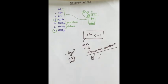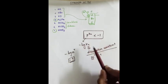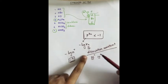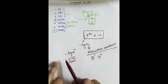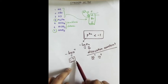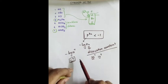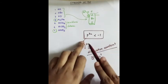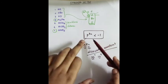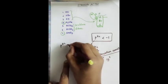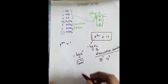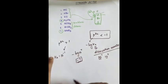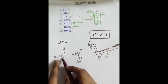pKa = −log(Ka). For a strong acid, Ka might be 10⁷ or 10⁹, giving a very negative pKa. For a weak acid, Ka might be around 10⁻⁴, which is very very small, giving a pKa of positive 4. So the stronger the acid, the smaller (more negative) the pKa.